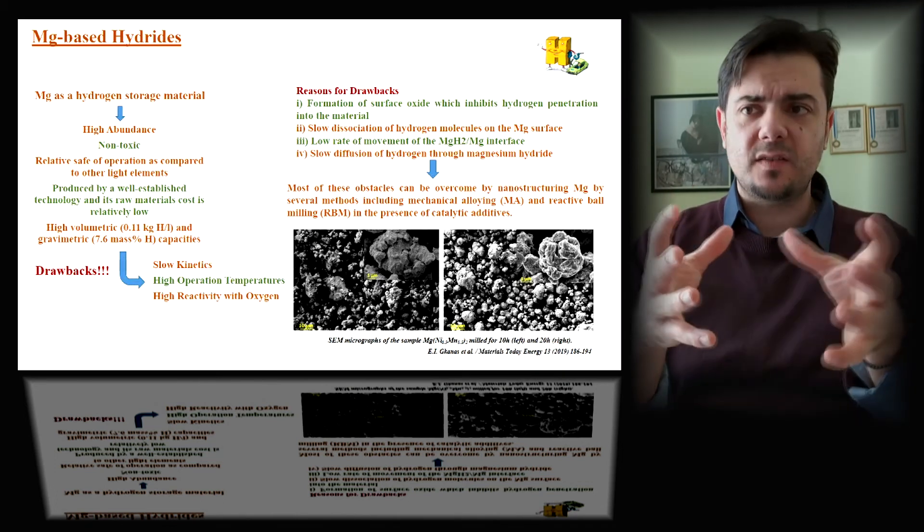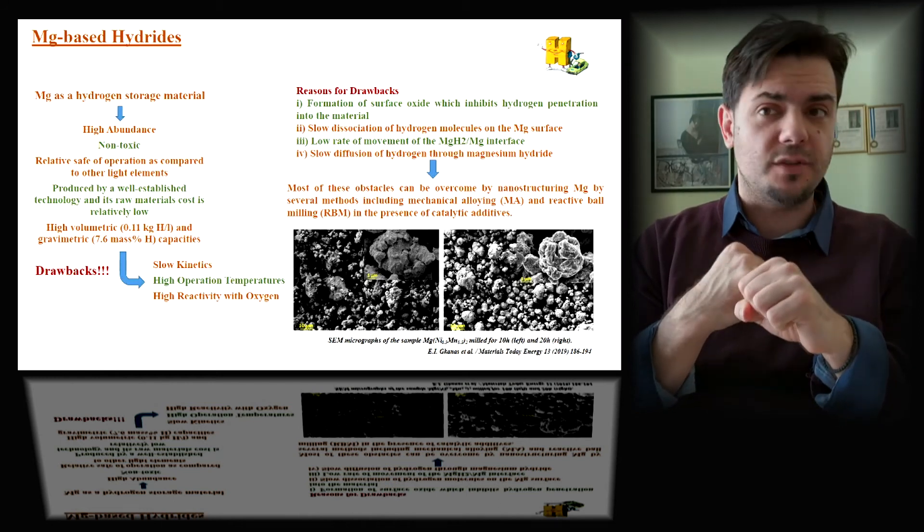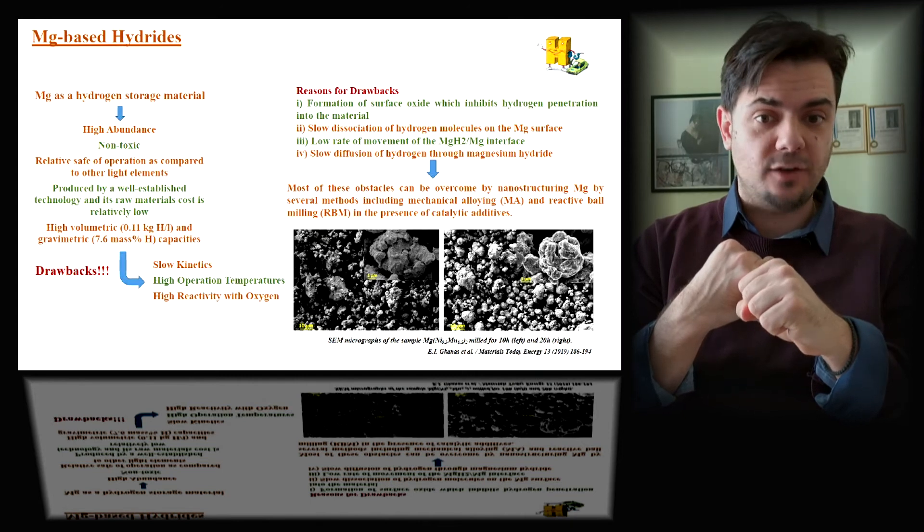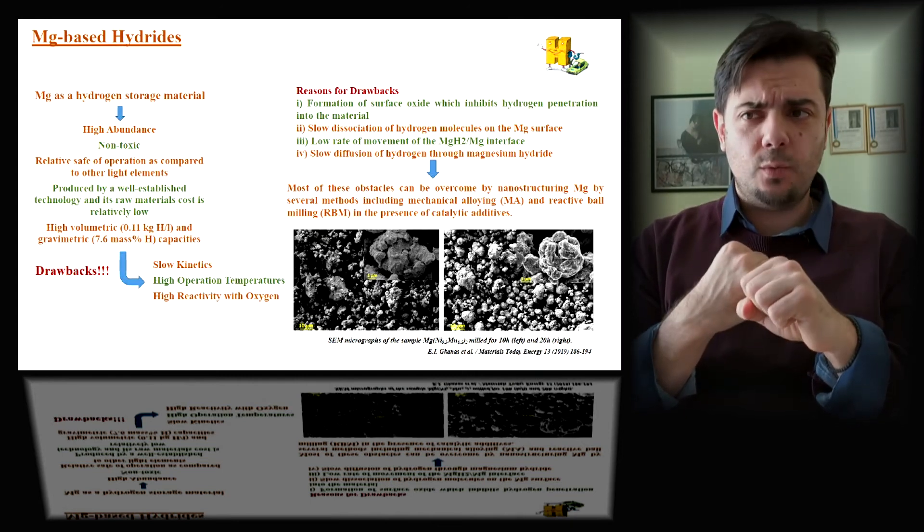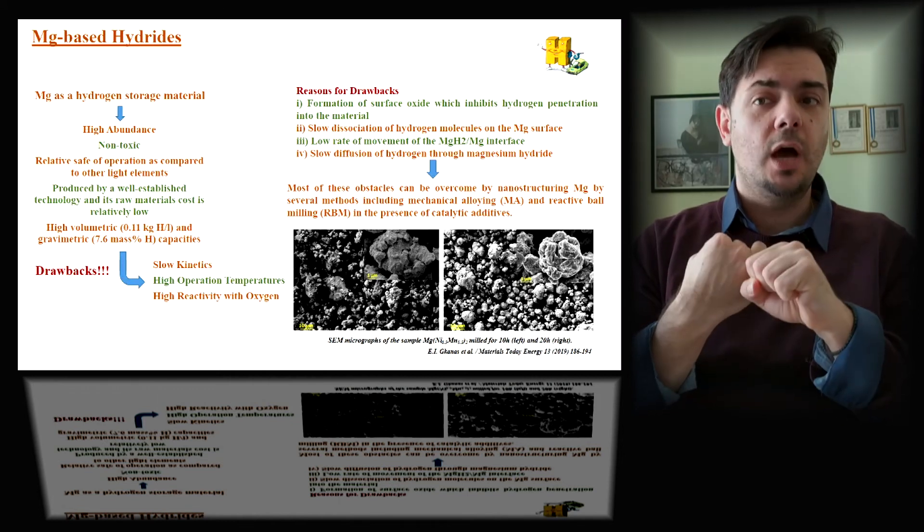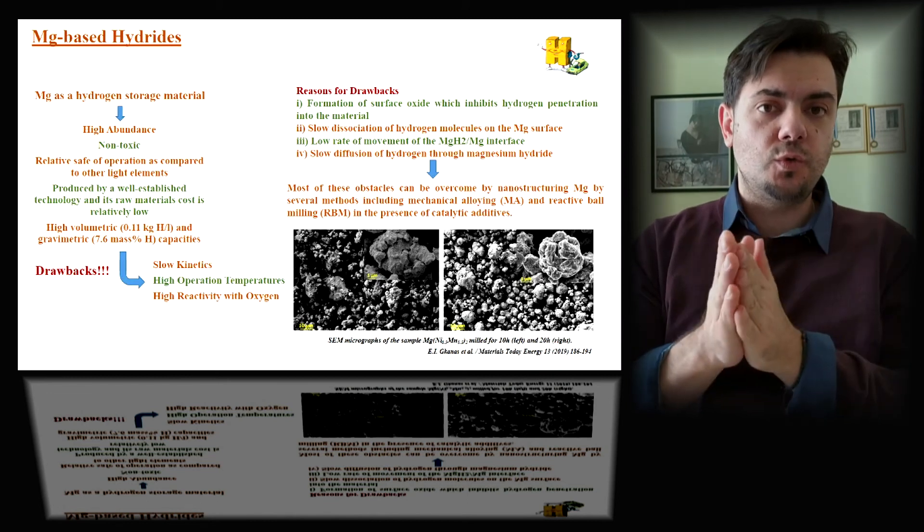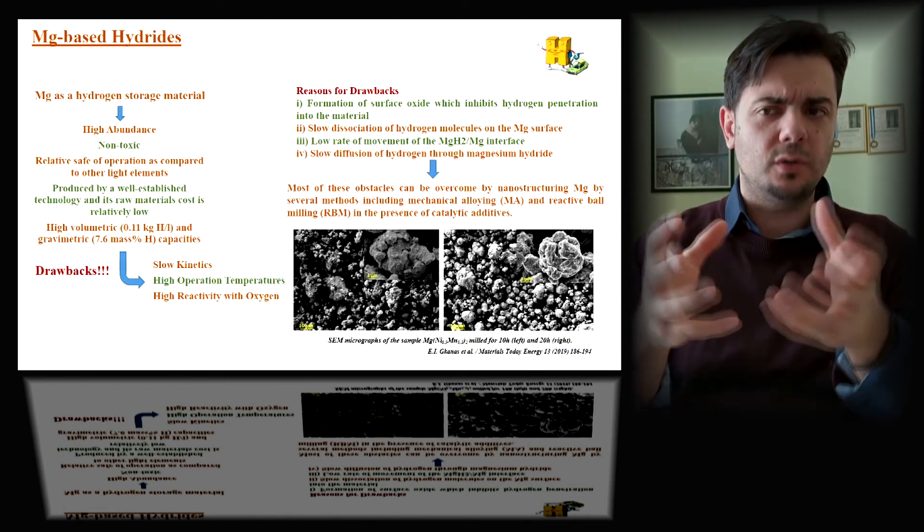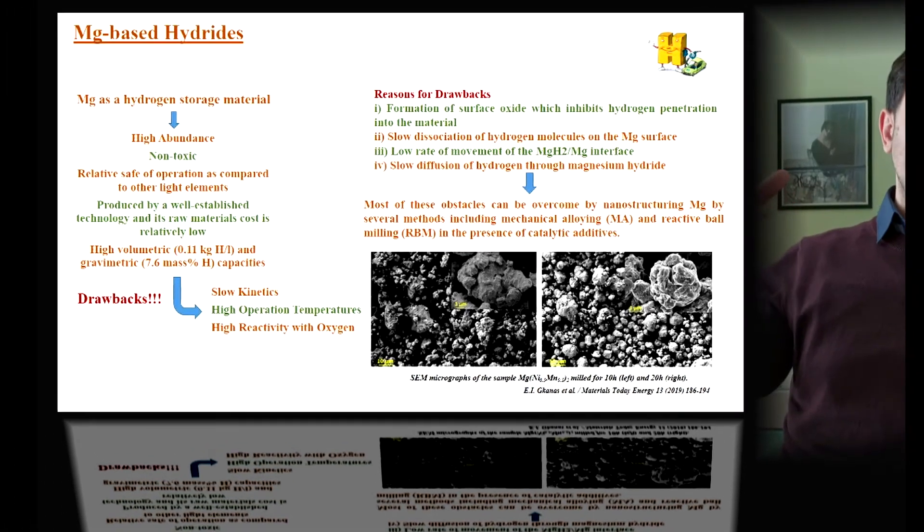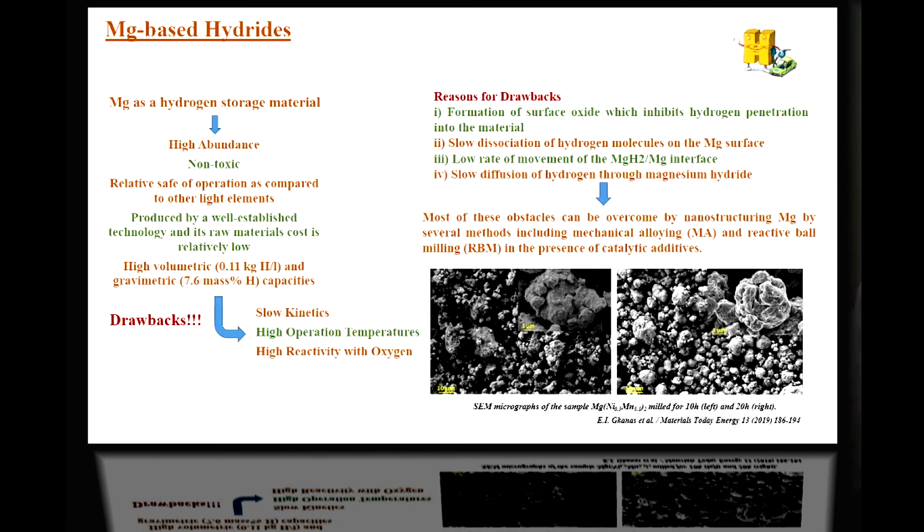The reasons for those drawbacks is the formation of oxide layers on the surface. So we have to go through high energy preparation, high energy activation. Then we have the slow dissociation of hydrogen molecules on the magnesium surface, and that results in really slow kinetics, and we have slow diffusion through the hydride. There are several things we can do. Of course, we can do heat treatment after the synthesis, or we can go to other synthesis ways when it comes to high energy ball milling. So we can use several ratios under several atmospheres to create this magnesium. There's a lot of groups that worked and still work on magnesium alloys, and several nice things have arisen out of this.